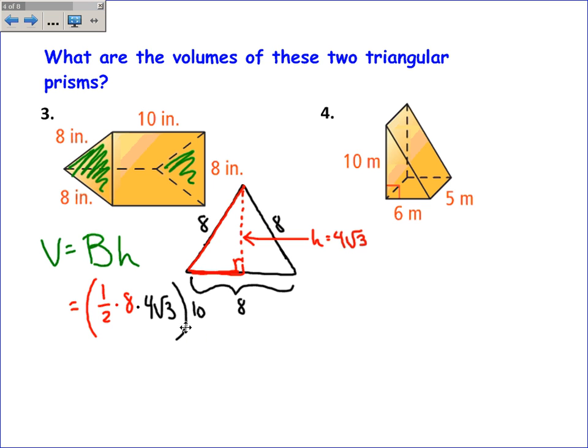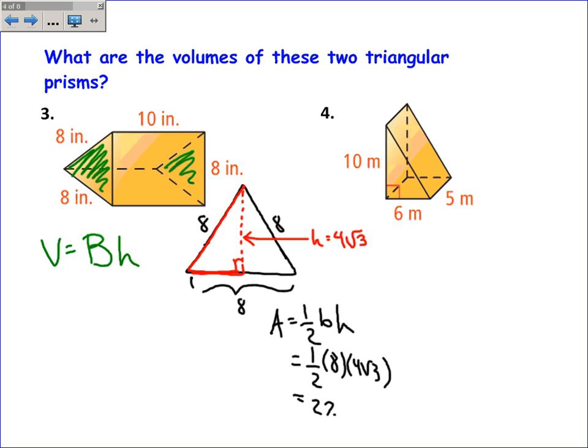Let me back up real quick. Let me not do it all together at the same time. That may be a little less confusing. Let me focus on just finding the area of this triangle. The area is 1/2 bh. The base of the triangle is 8, and the height of this triangle is 4 root 3. And so the area of this triangle is 27.71.